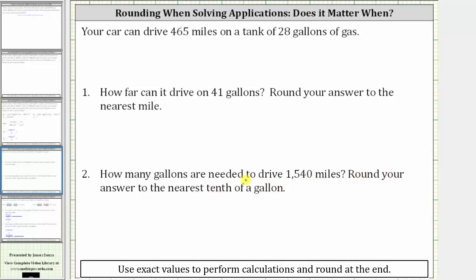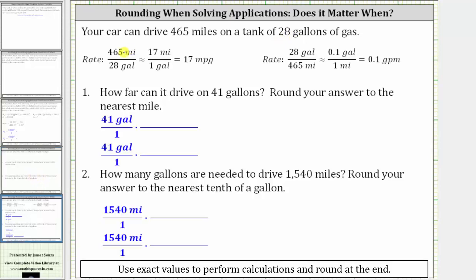To answer these questions, we will need to express the given information as two separate rates. One way to express the rate is 465 miles per 28 gallons. We can also express the rate as 28 gallons per 465 miles.